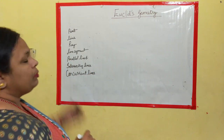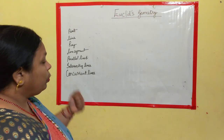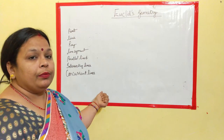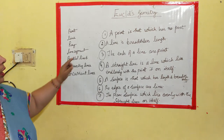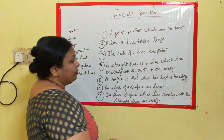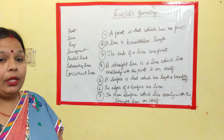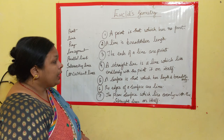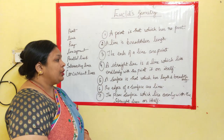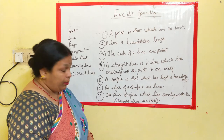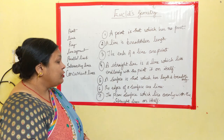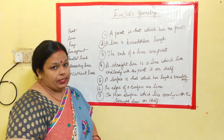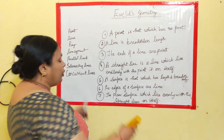Now what we have seen here is: a point is that which has no part — no length. A line is breadthless length. The ends of a line are points. A straight line is a line which lies evenly with the points on itself. A surface is that which has length and breadth only, and the edges of a surface are lines.